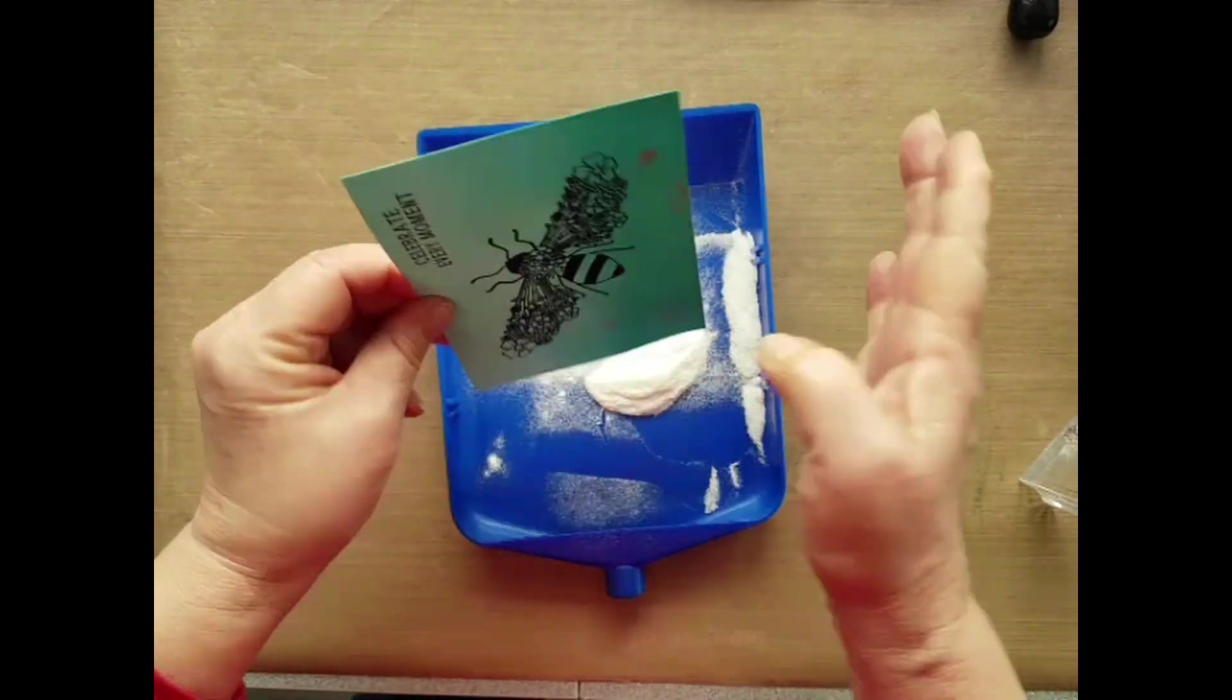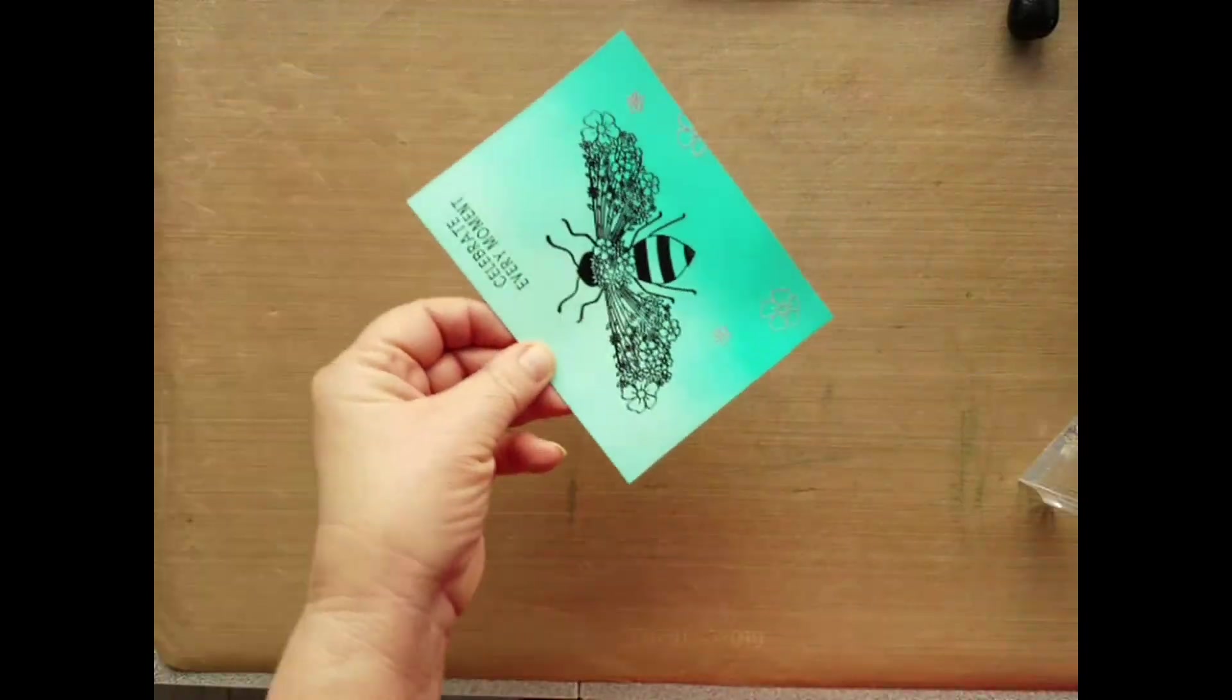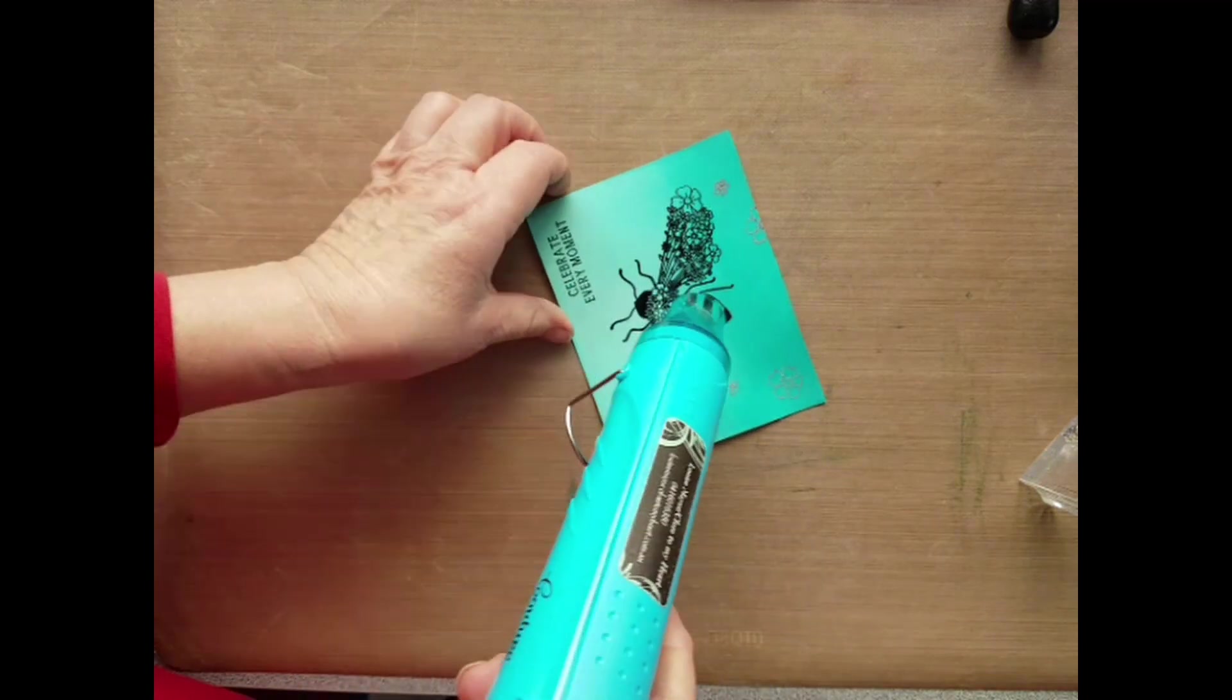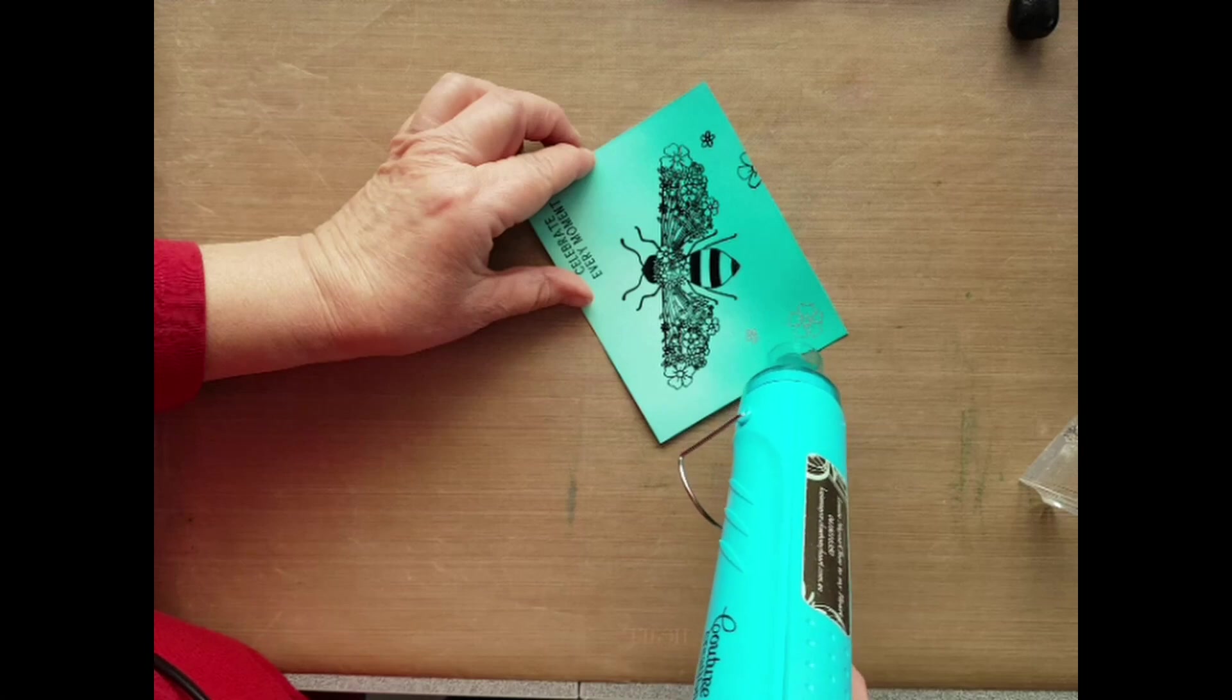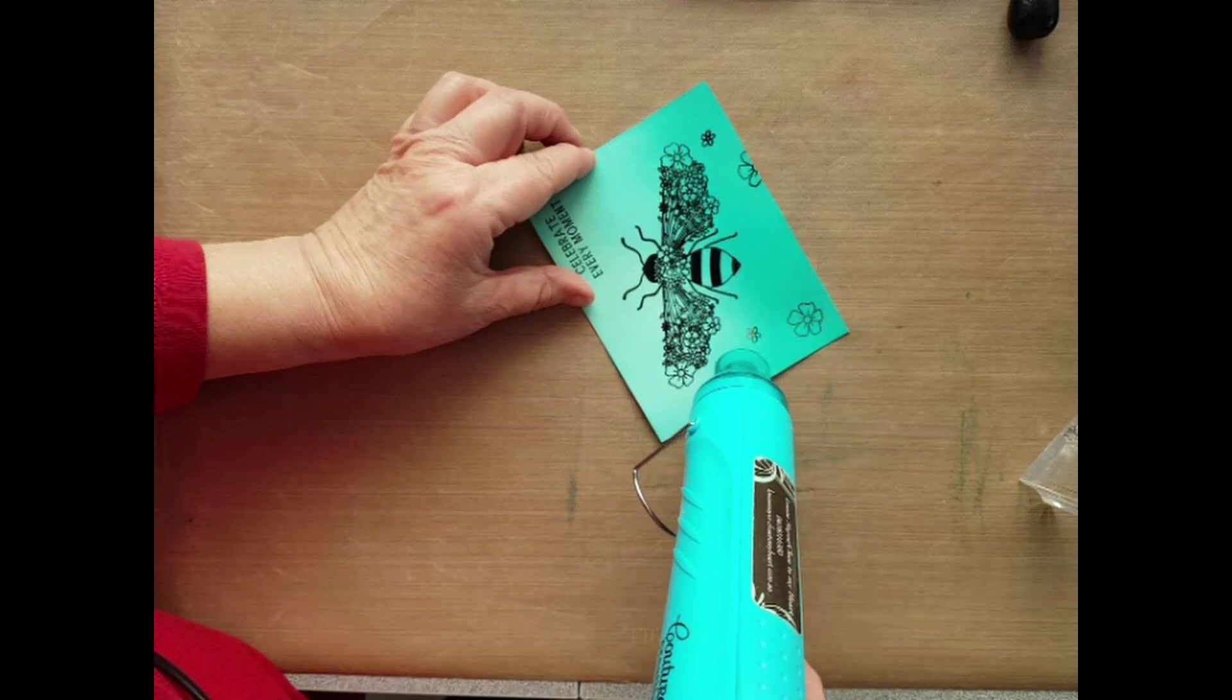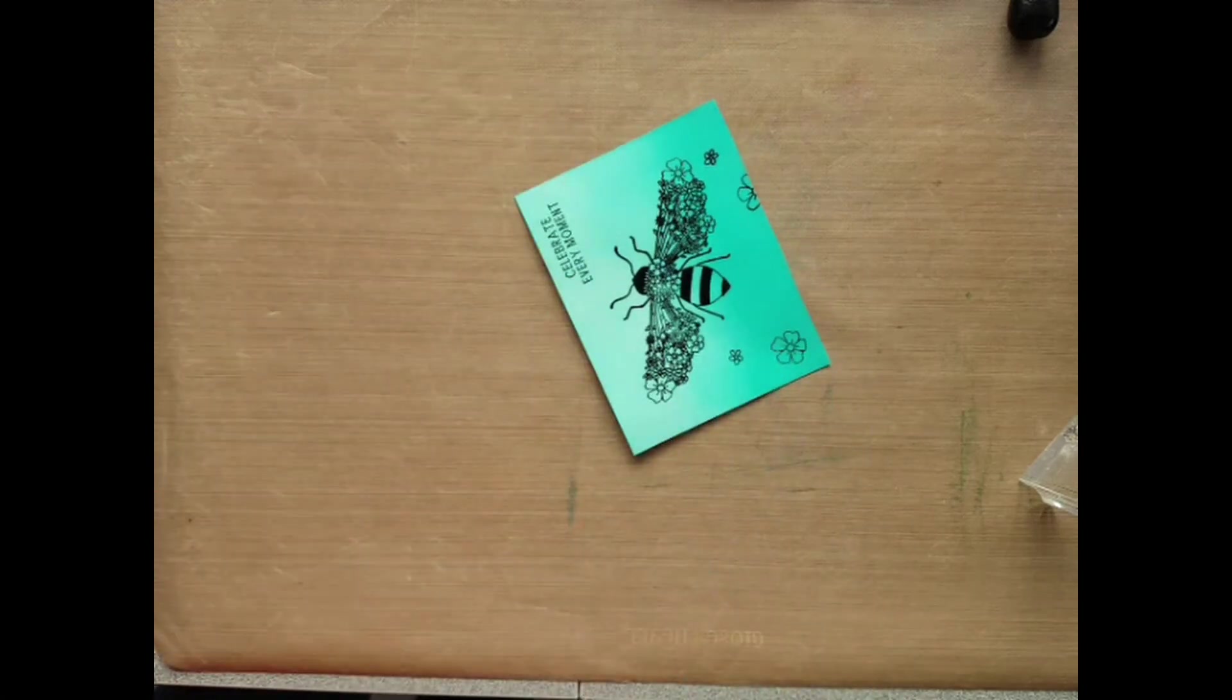Some more heat embossing with the clear embossing powder, heat again, and our card front is complete.